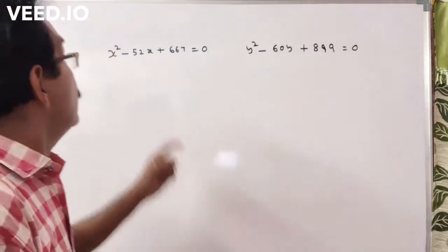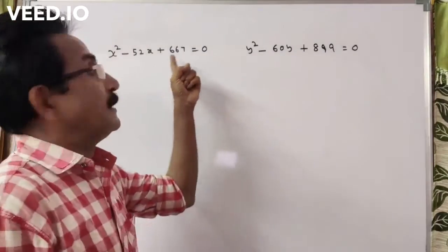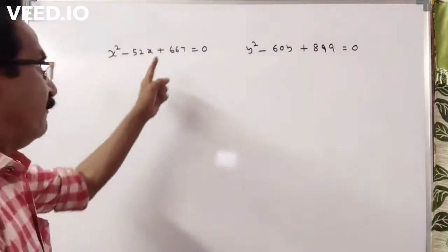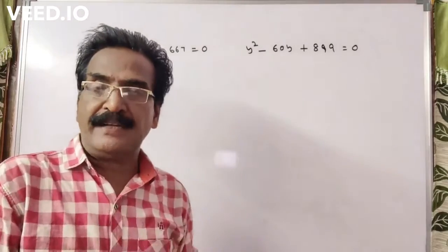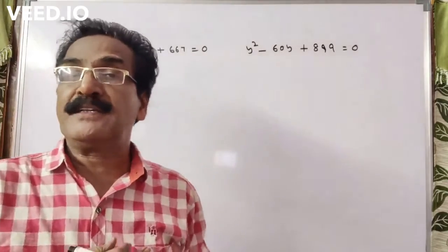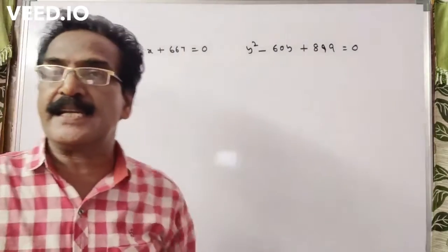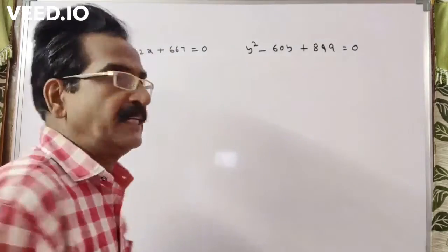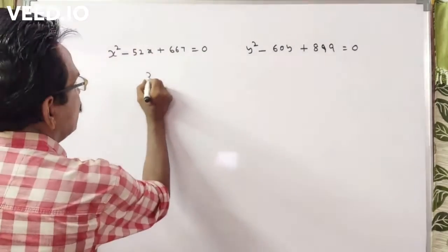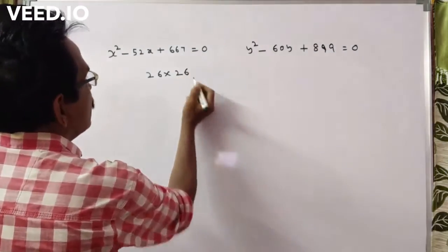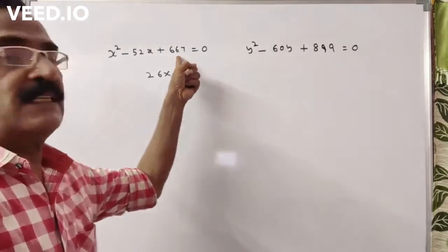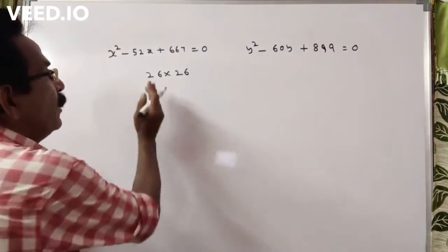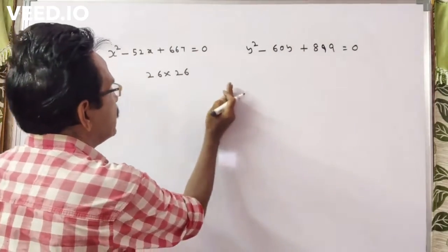Hi friends, good morning. Let us take the next problem. x square minus 52x plus 667 is equal to 0, and y square minus 60y plus 899 is equal to 0. The next highest perfect square after 667 is 676, which is 26 into 26.